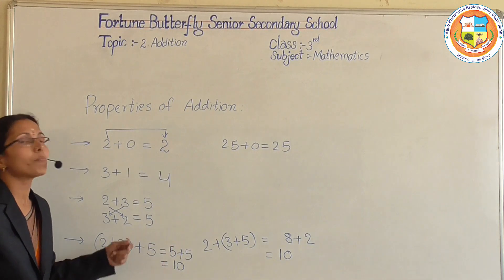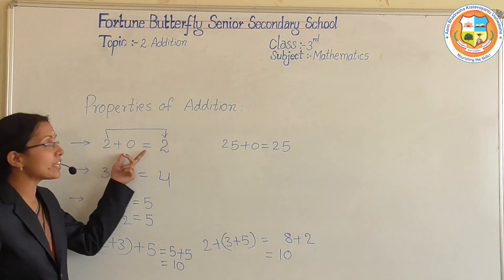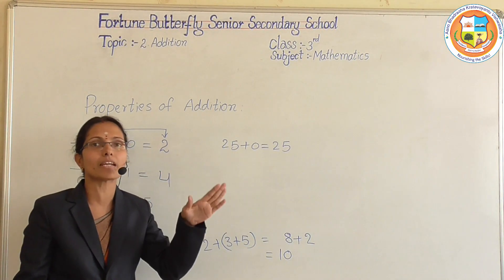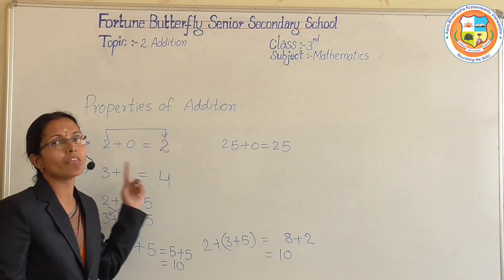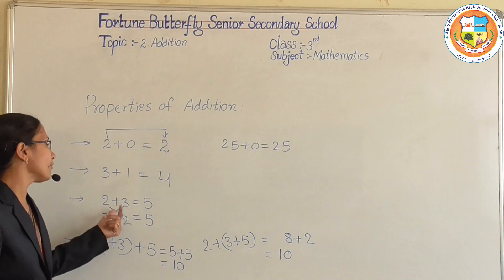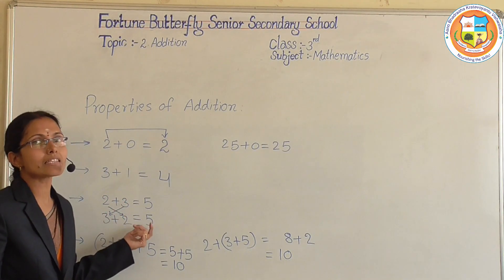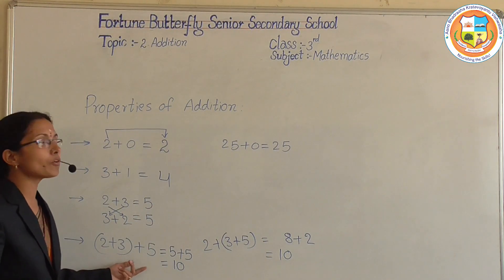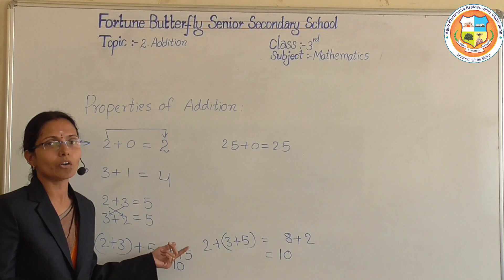So these are the properties of addition: adding 0 gives the same number; adding 1 gives the just-next number; changing the order gives the same sum; and grouping the numbers differently also gives the same result.